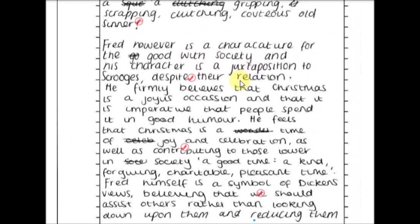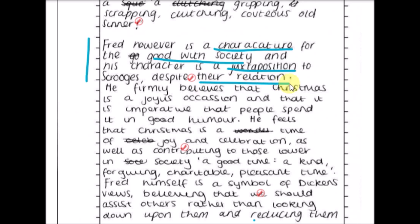Fred, however, is 'a character for the good within society, and his character is a juxtaposition to Scrooge despite their relation.' That's beautiful — a really clear band five argument. There's a focus on juxtaposition, Fred summarized as a symbol for the good within society, and an understanding of their relationship. In one sentence there are so many skills — that is a clear band five argument and paragraph opener.